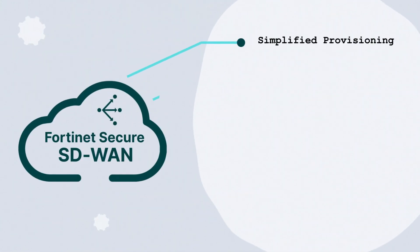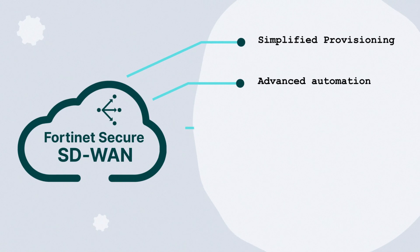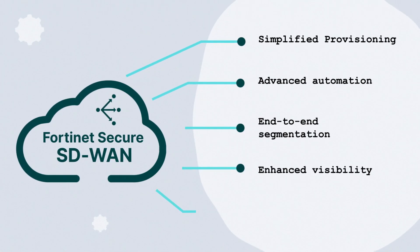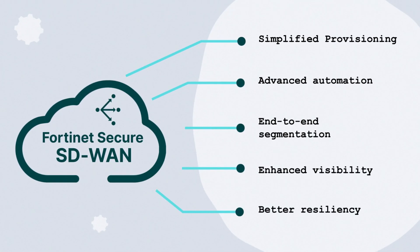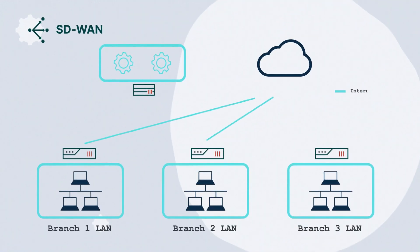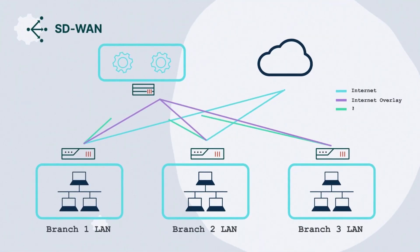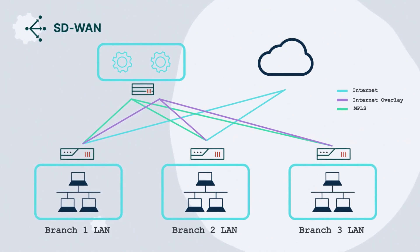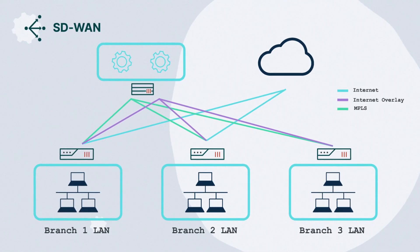With the release of FortiOS 7.2 operating system, we've added several major solution enhancements. This includes the new SD-WAN overlay wizard, which allows you to simplify and automate the build-out of a scalable and redundant SD-WAN network.